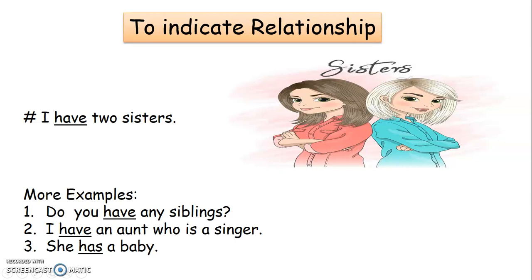More examples. First, 'Do you have any siblings?' To indicate a relationship, we make use of the verb 'have'. Second, 'I have an aunt who is a singer.' To indicate the relationship between the person and his aunt, we make use of the verb 'have'. Third, 'She has a baby.' To indicate the relationship between she and the baby, we make use of the verb 'has'.